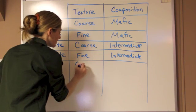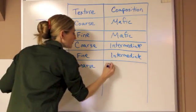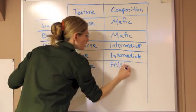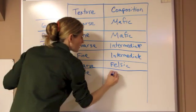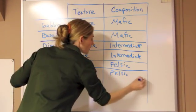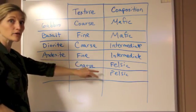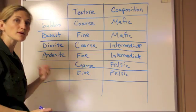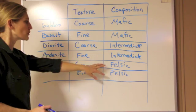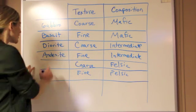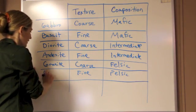And then we'll write felsic. We'll do fine-grained. Now when we look at these two, these are going to be much lighter in color. They have a lot more of the quartz and the light-colored feldspars in them to give them an overall light-colored composition, or felsic. Coarse-grained is going to be our granite, and our fine-grained is going to be rhyolite.